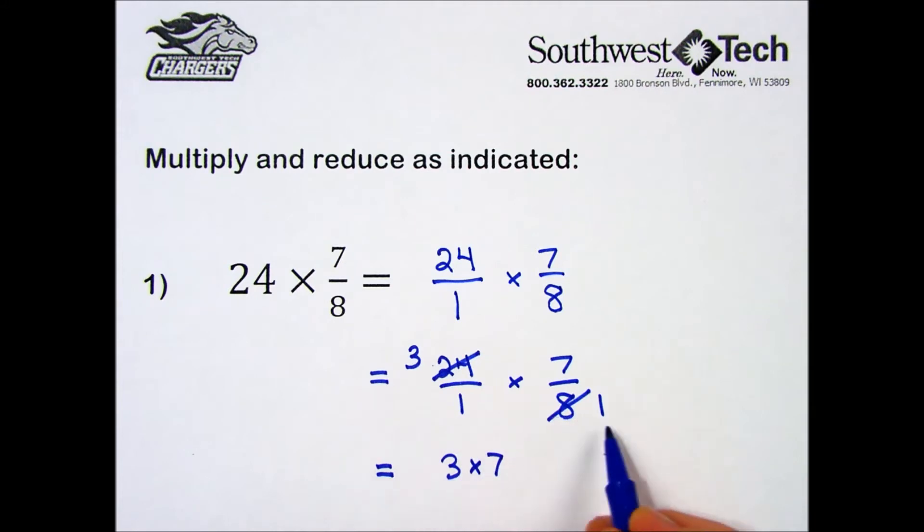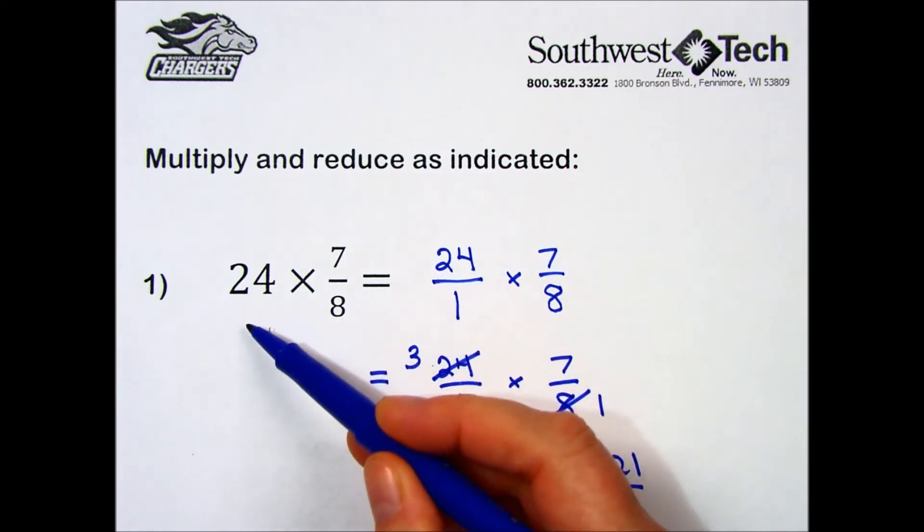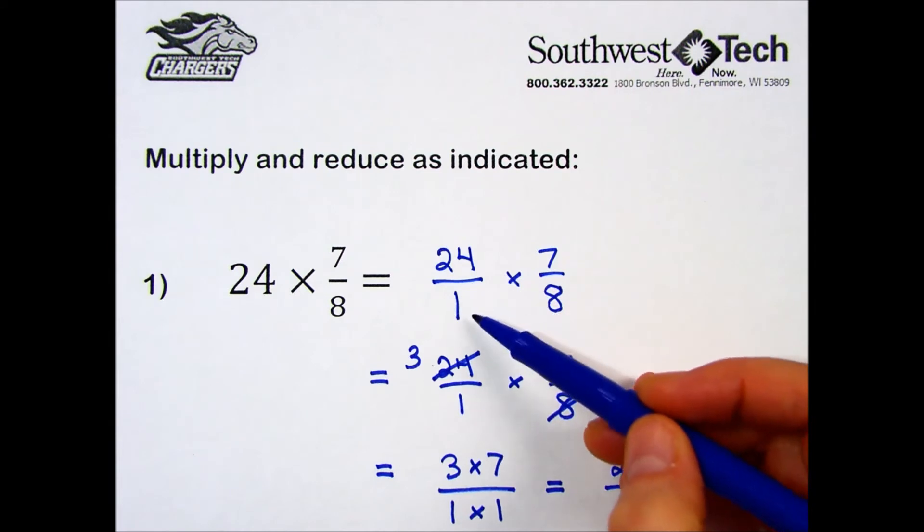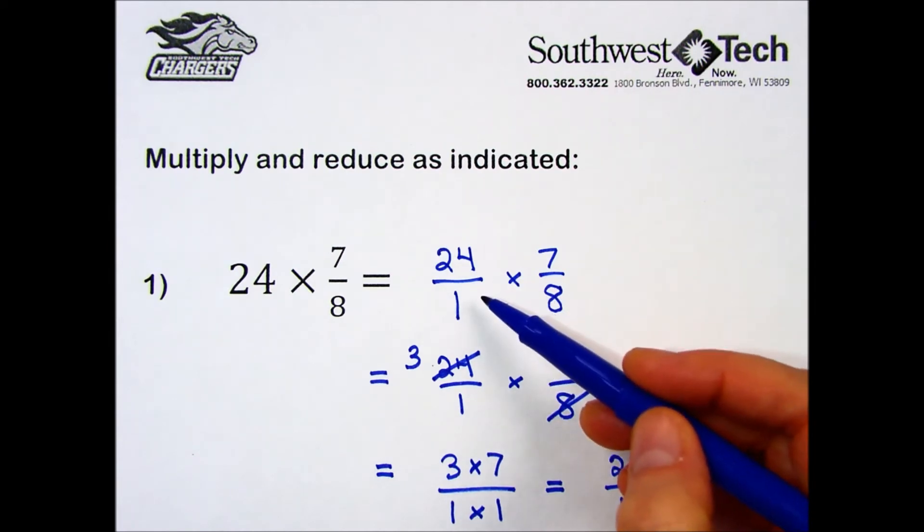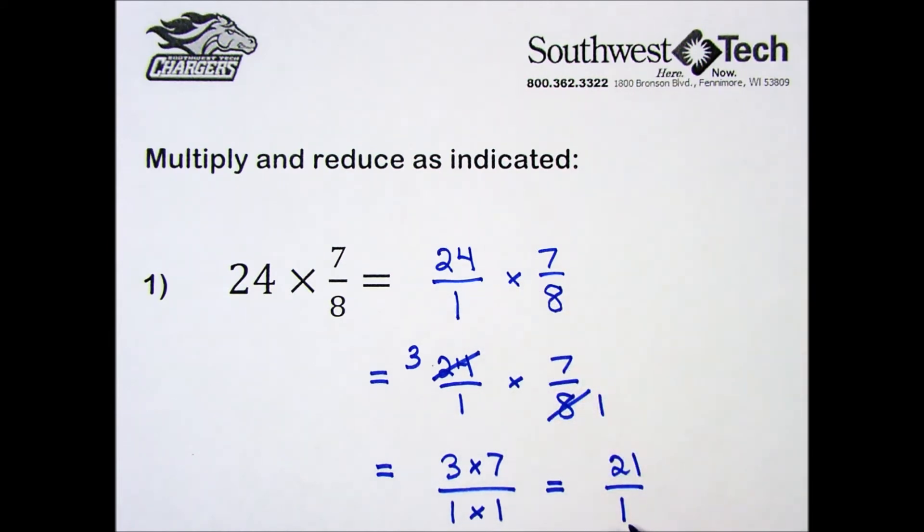Do the multiplication: 3 times 7 is 21, 1 times 1 is 1. And similar to how I can change a 24 into 24 over 1, I can reverse that procedure at the end. 21 with a denominator of 1 can be rewritten as just the whole number 21.